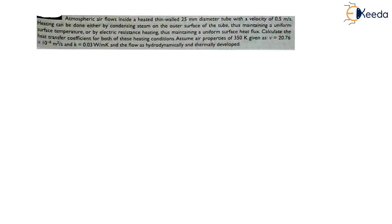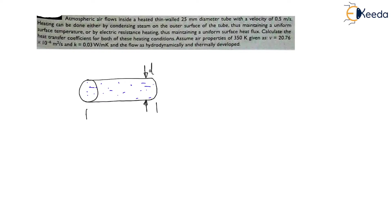The tube has a 25 mm diameter — that is 25 × 10⁻³ m. Let us say there is a cylinder like this; through the cylinder the air is flowing. The diameter is D and length is L. The diameter is 25 mm.